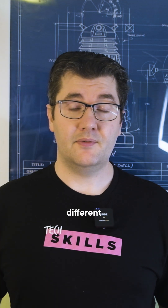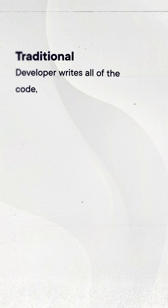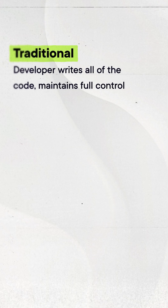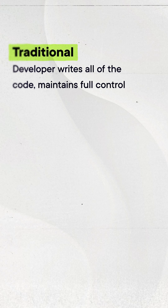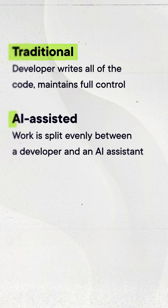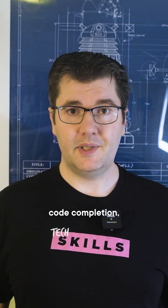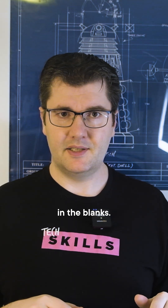Vibe Coding is significantly different from traditional development or AI-assisted development. With traditional development, the developer writes all the code and has full control over every detail — this is what most people think of when they think of coding. With AI-assisted development, the work is split evenly between a developer and an AI assistant, the most common form being AI code completion, where you write some code and the AI fills in the blanks.